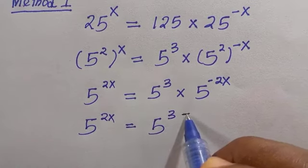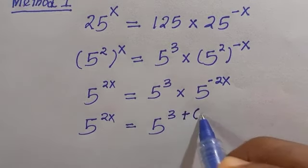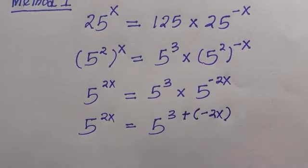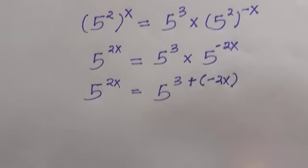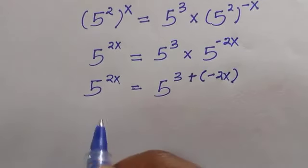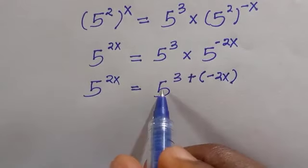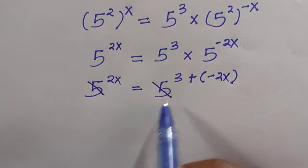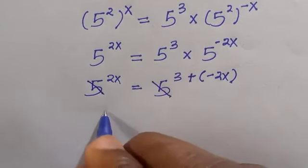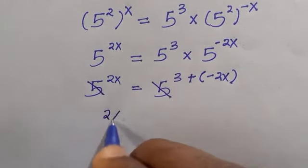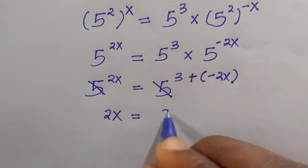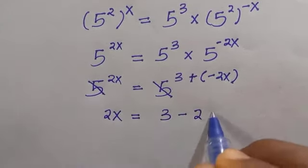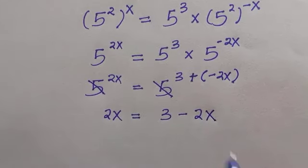Applying the addition law of exponents, since the bases are both 5 and they cancel each other, the powers must be equivalent. So we have 2x equals 3 minus 2x.